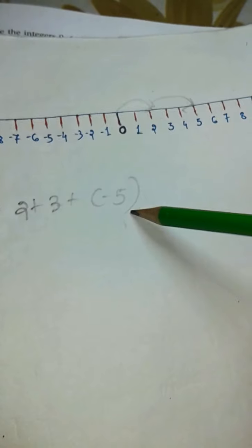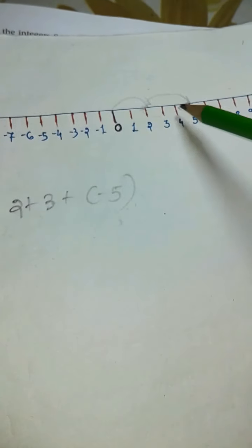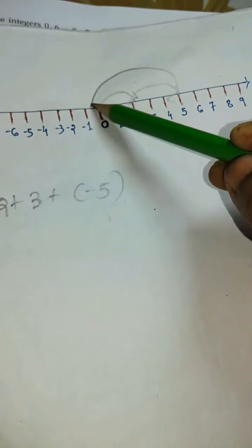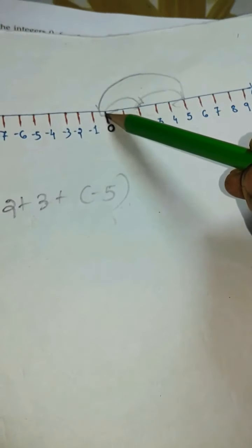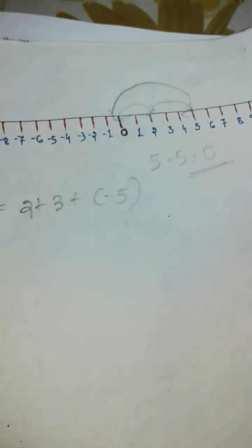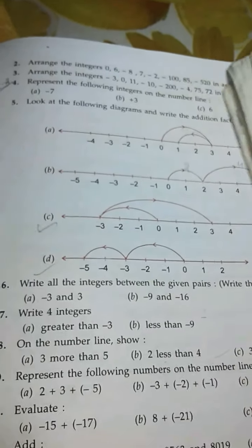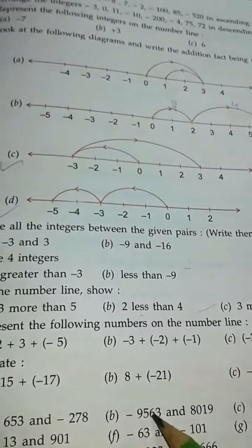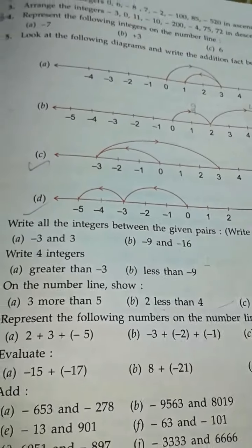Then the answer is 0 to 5. Then minus 5 means we move backward. 5 steps we move backward, so we reach here 0. So 5 minus 5 is 0. So the answer is 0. Like this children, other parts B and C, you do yourself.